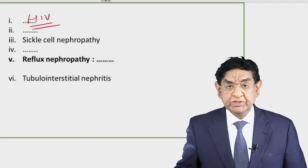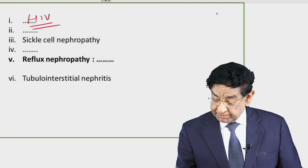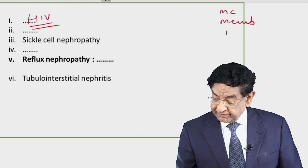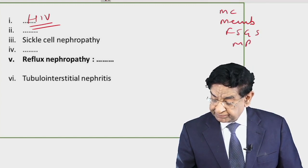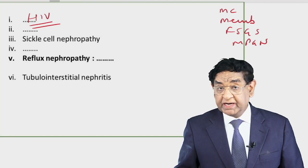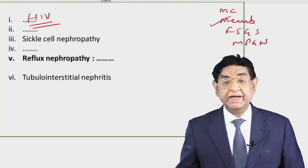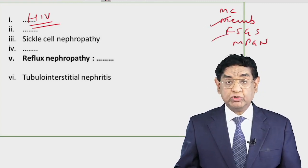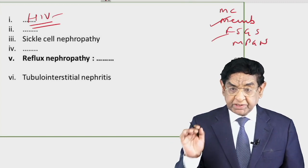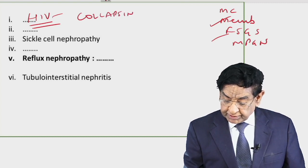Out of the four primary glomerular diseases — minimal change, membranous, FSGS, and MPGN — which can lead to nephrotic syndrome, membranous used to be the most common in adults, but now it is FSGS due to HIV. In HIV, we get a type of FSGS called collapsing glomerulopathy.